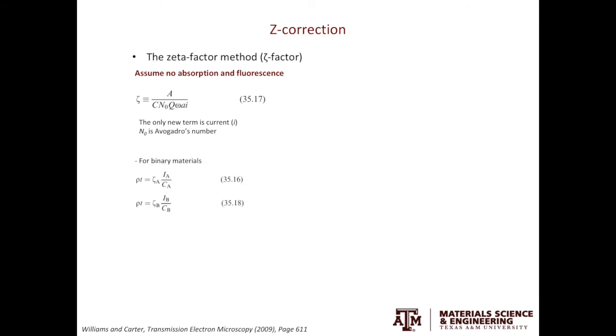For binary systems, you can write down the relationship of the composition of each element and the intensity in the EDS spectra. Using the zeta factor approach in many cases is advantageous compared to the k-factor approach. This is because in k-factors, the value is not element-specific. It depends on which element you are compared to.